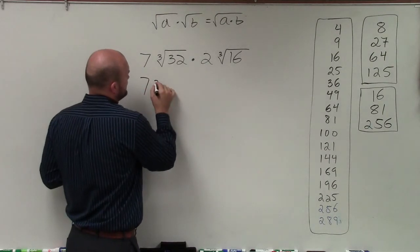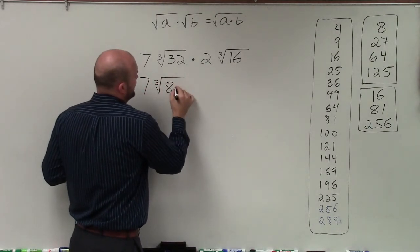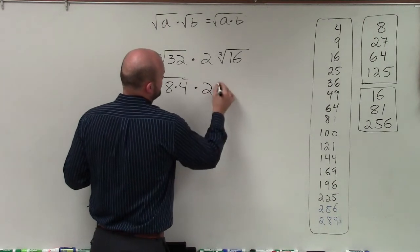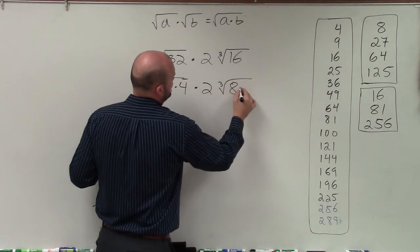So therefore, I'm going to rewrite this: 7 times the cube root of 8 times 4, times 2 times the cube root of 8 times 2.